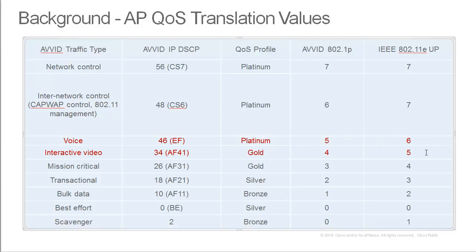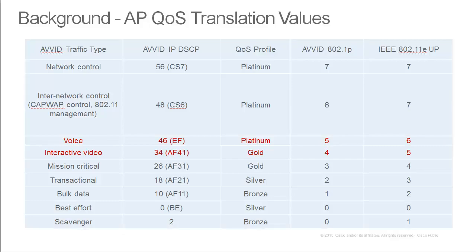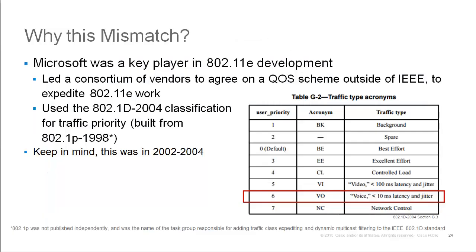The same logic applies to video, where it is 5 on the Wi-Fi side and 4 on the Ethernet side. We say this marking is a Cisco-specific recommendation, but the 802.11e protocol actually specifies that voice should be 6 and video should be 5. The general industry practice is that voice should be 5 on Ethernet, not 6. So why is that?